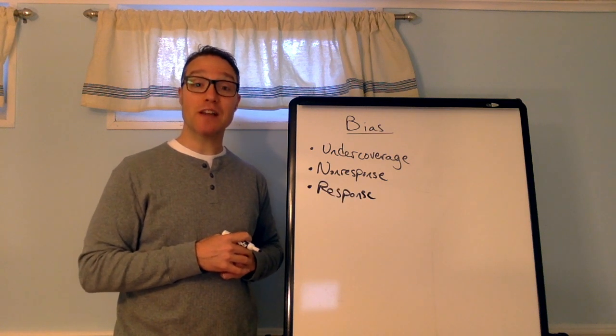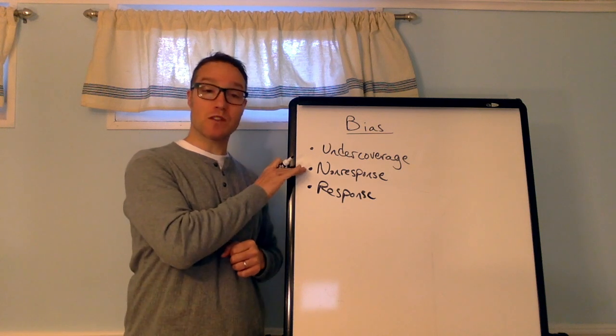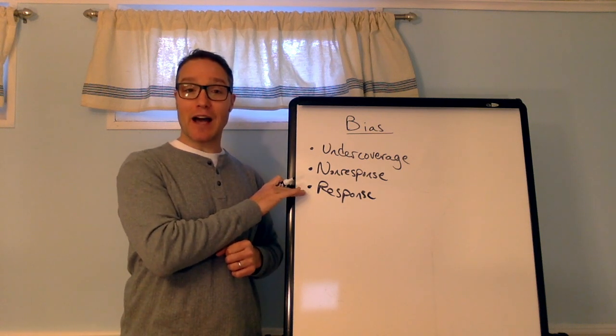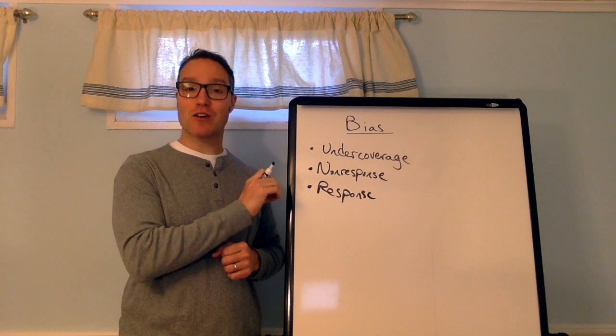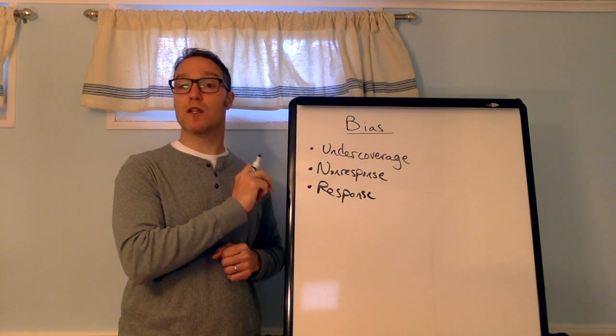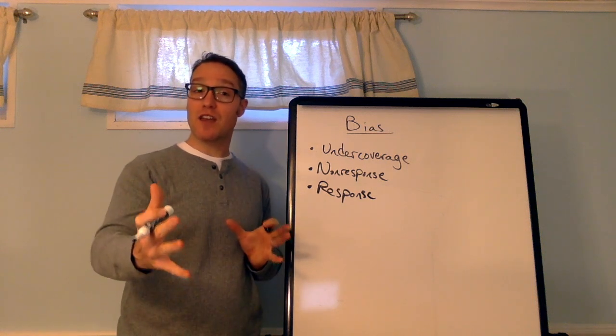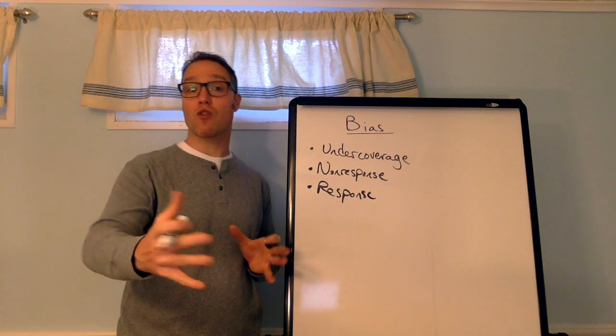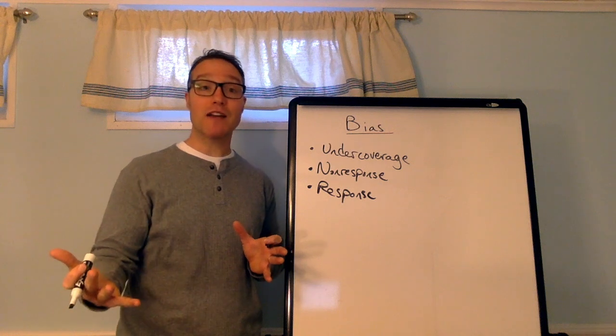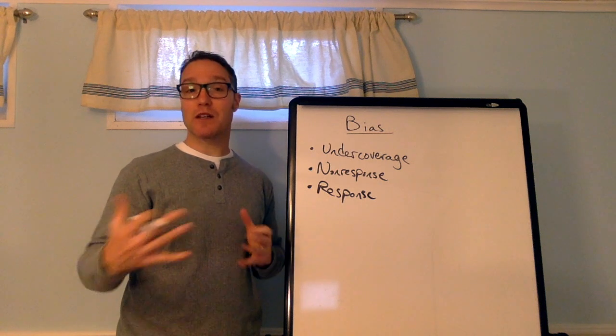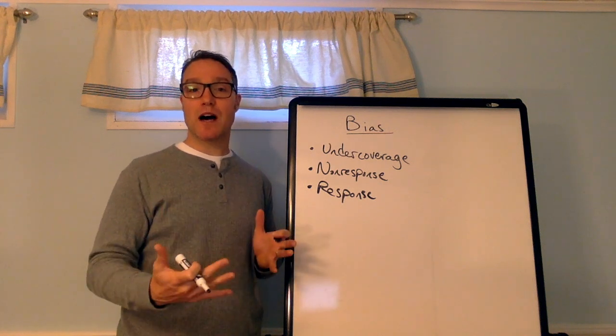A third important type of bias is response bias. So, there's non-response when someone doesn't respond. Response bias is a systematic pattern of incorrect responses or lies in a survey. So, if somebody's just not telling the truth, maybe they're telling you what they think you want to hear as the researcher or what would make them look best to give an answer but it's not really the truth, that's response bias.